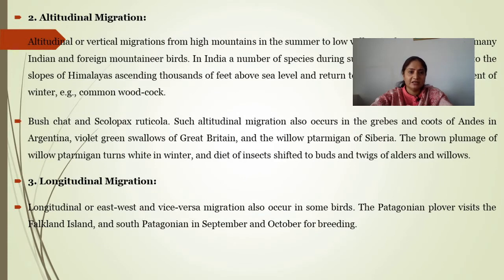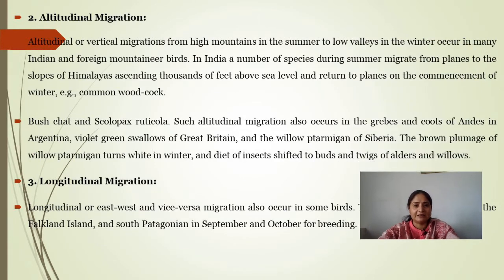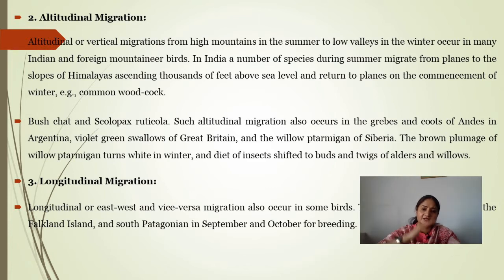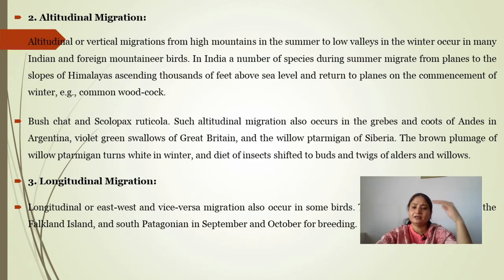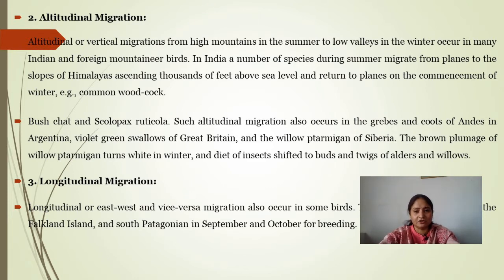Altitudinal migration is migration from mountain ranges — from low to high and high to low. Altitudinal or vertical migration from high mountains in the summer to low valleys in winter occurs in many Indian and foreign mountain birds. In India, a number of species during summer migrate from the plains to the slopes of the Himalayas, ascending thousands of feet above sea level.